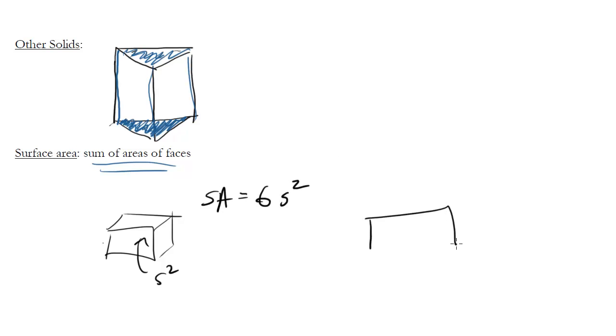Now how about for something like a rectangular prism? Well there's no real formula for this. I mean I guess there might be, too complicated, but basically you've just got to find the areas of all the faces and add them together, and that's about it.